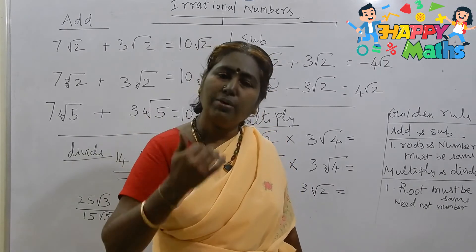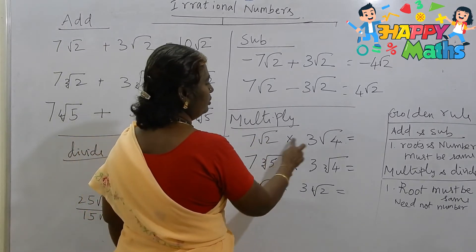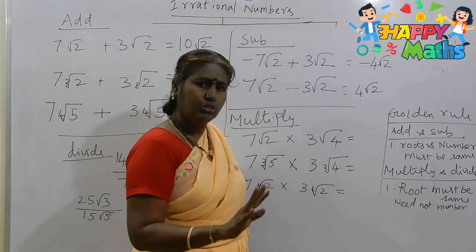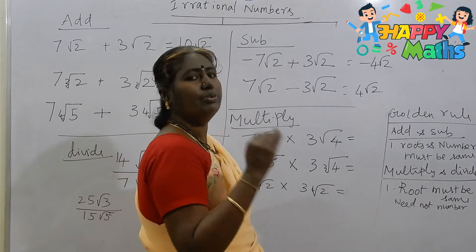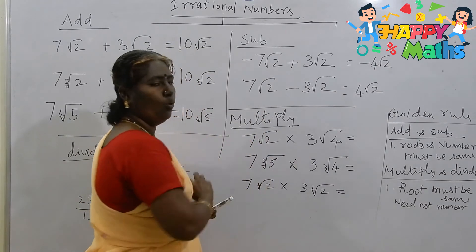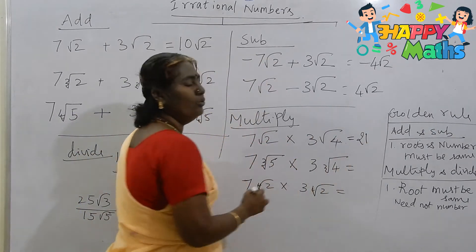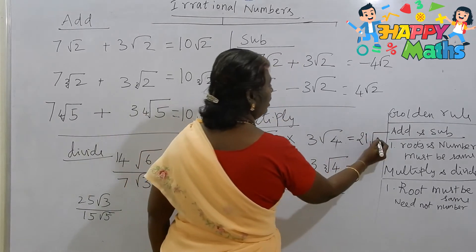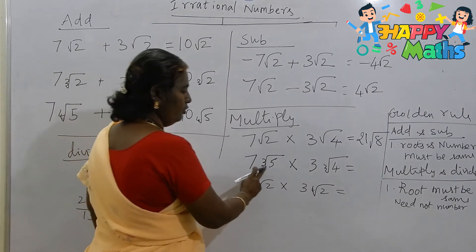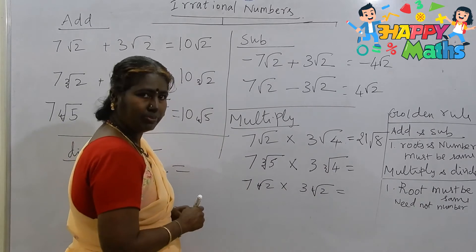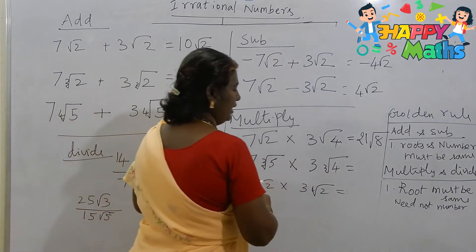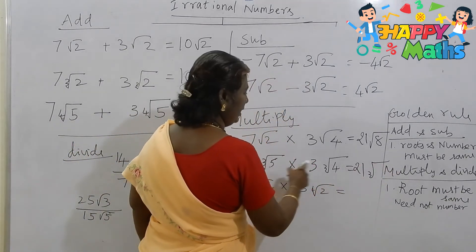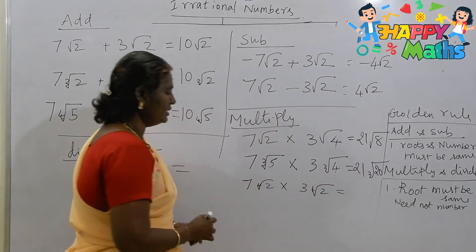Now, what about multiplication? For multiplication, both must be with the same root — verify whether the jail is the same, whether the root is the same. If yes, you can multiply the roots also. You must maintain two steps: first multiply the whole numbers — so 7 times 3 is 21. Then multiply the root numbers: if both are in the same jail, you keep the same root. So 2 times 4 is 8, giving 21 root 8. Here, 7 cube root of 5 times 3 cube root of 4: both are cube root, so 7 times 3 is 21, then cube root of 5 times 4 is cube root of 20.